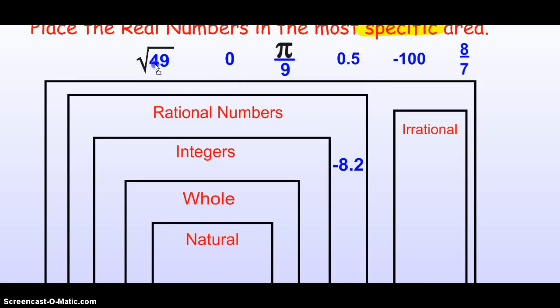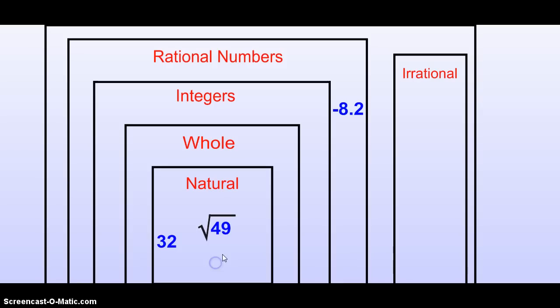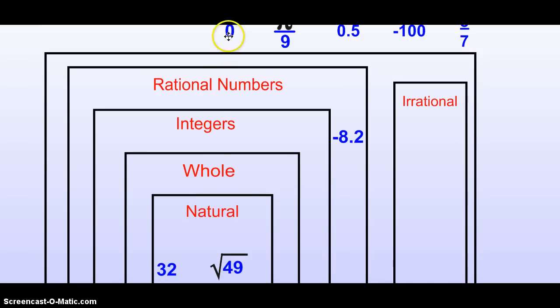Square root of 49. So, the thing you have to remember here, the square root of 49, what does that really mean? The square root of 49 really is 7. So, don't look at it as negative, square root of 49, look at it as 7. And, 7 is a natural number. 0.